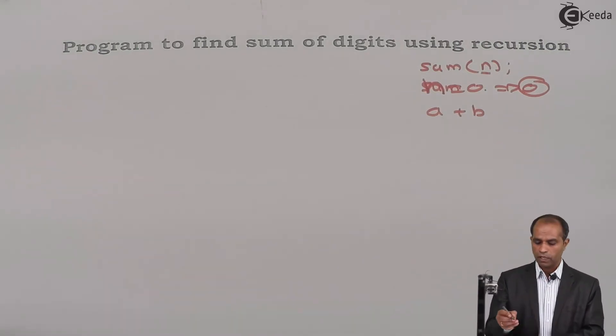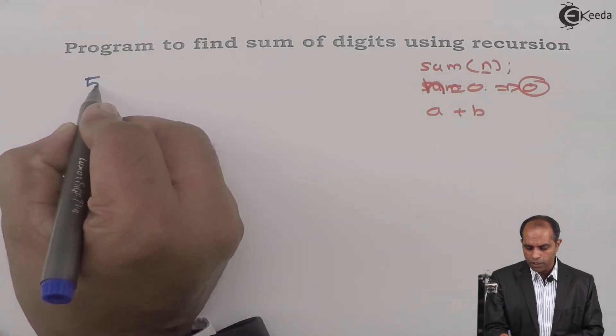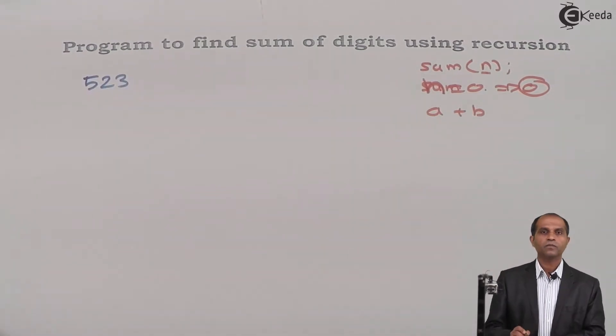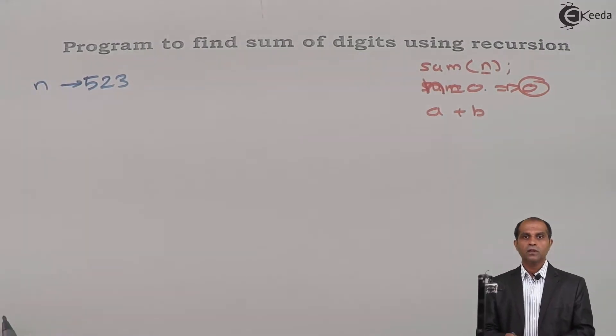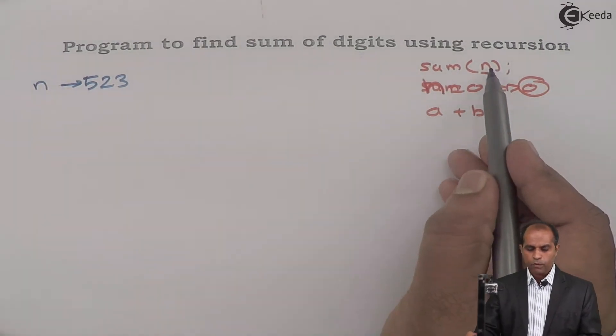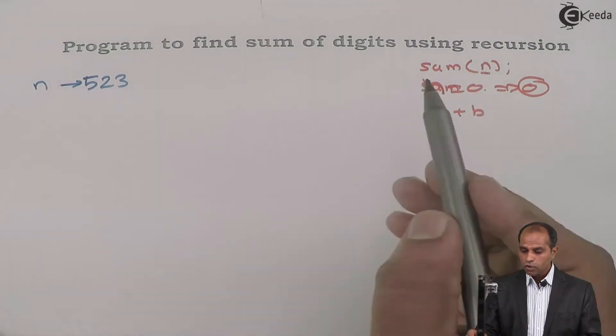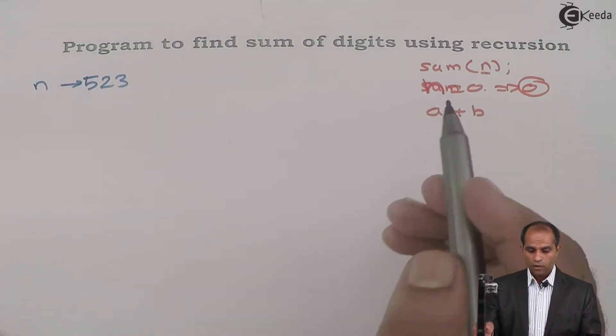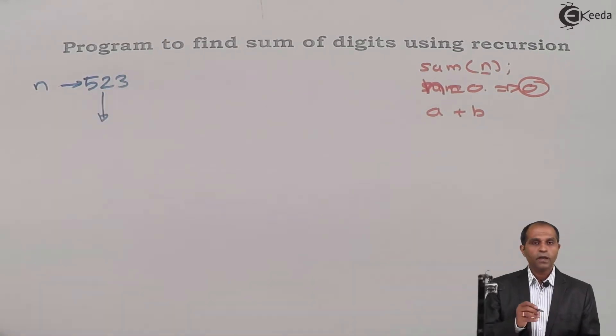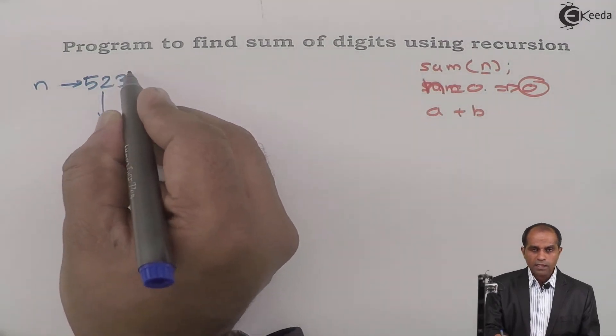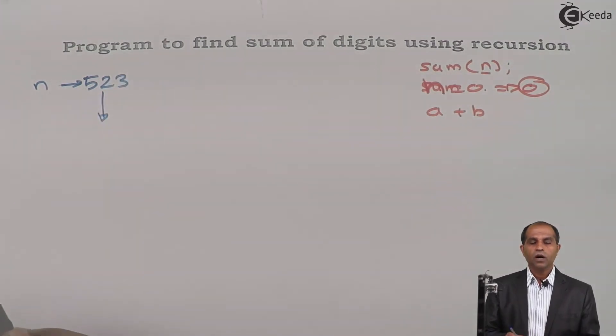Let's take a simple scenario. Assume that the input which is given is 523. So now this is my variable n. So I'll say I'm going to accept one number as 523. So is this number 0? No. Then you'll say if number is not 0, what I'll do? I'll keep the last digit with me.